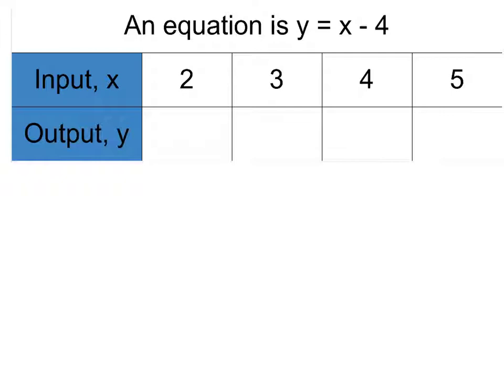Looking at a different example, we're actually given the equation that we need to use for our table to fill it in. So an equation is y equals x minus 4, a lot like our previous example. So we need to subtract each of our inputs or domains or x values by 4 in order to find out what our range or output is.